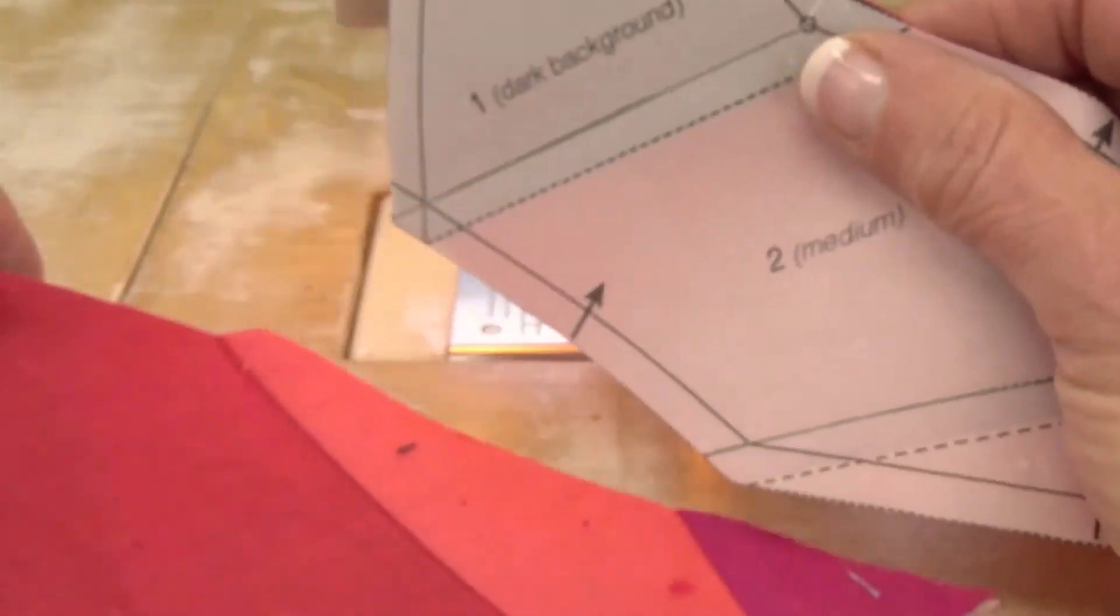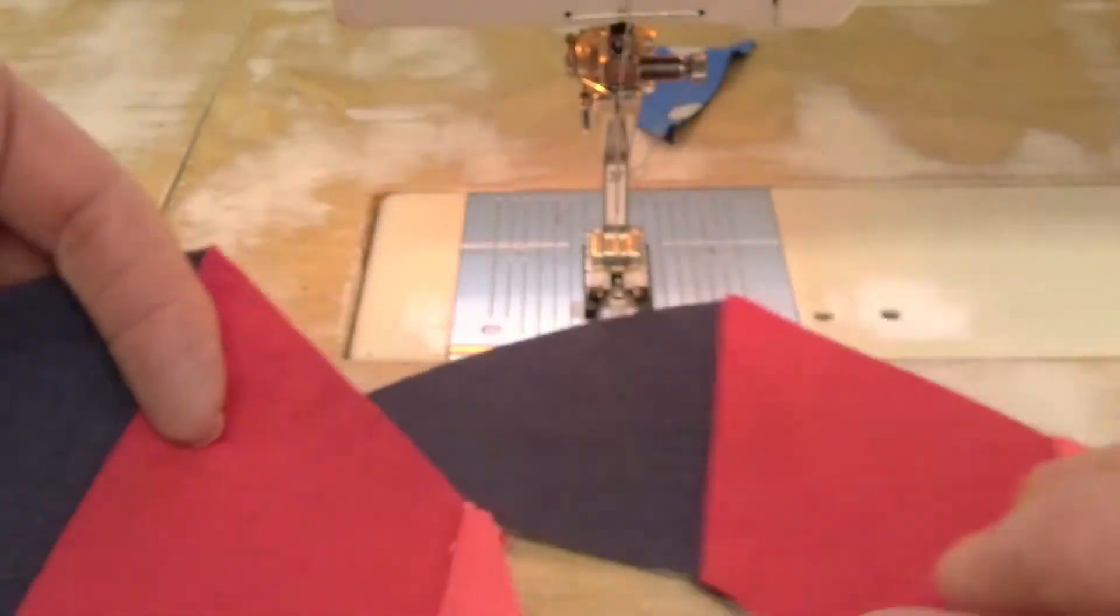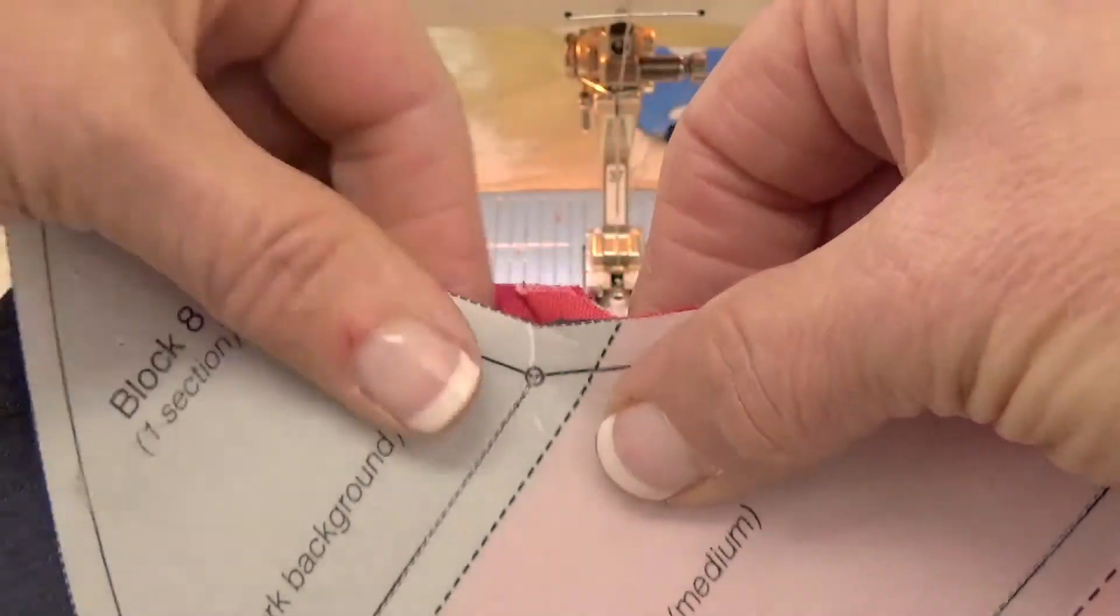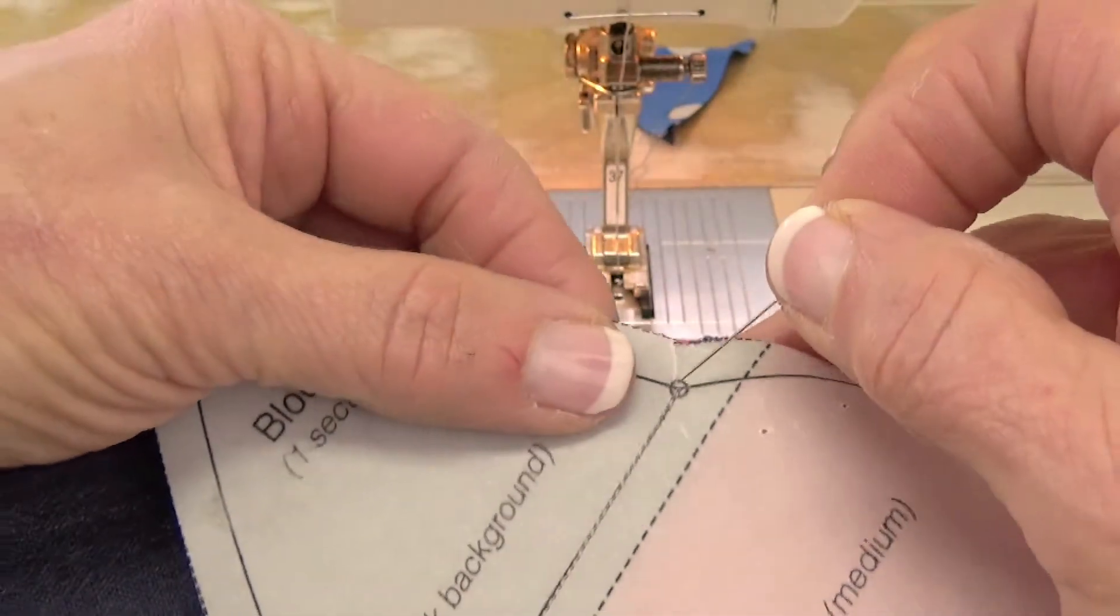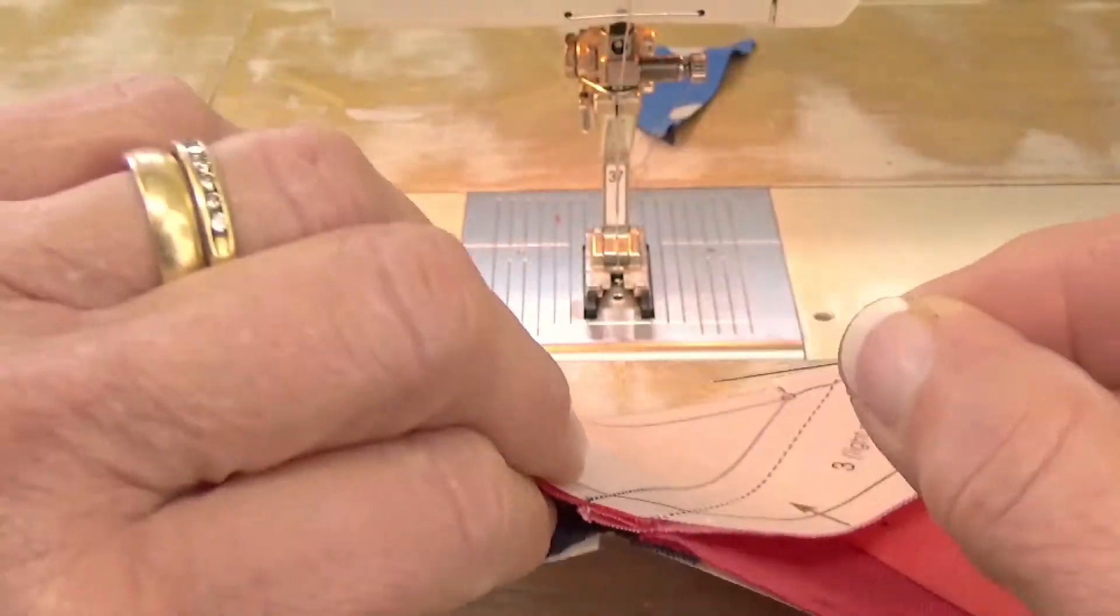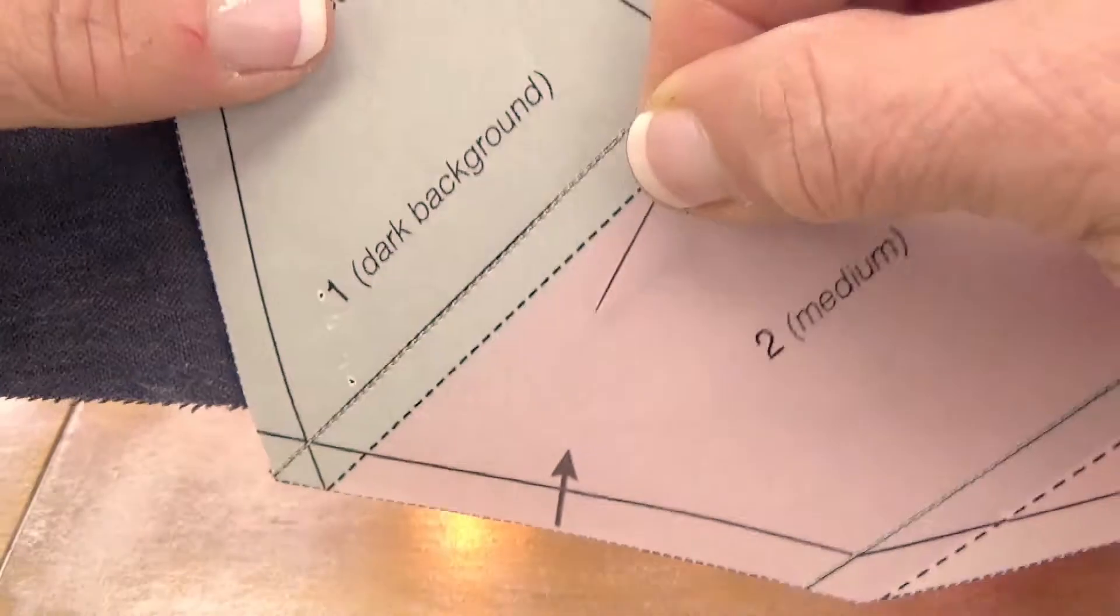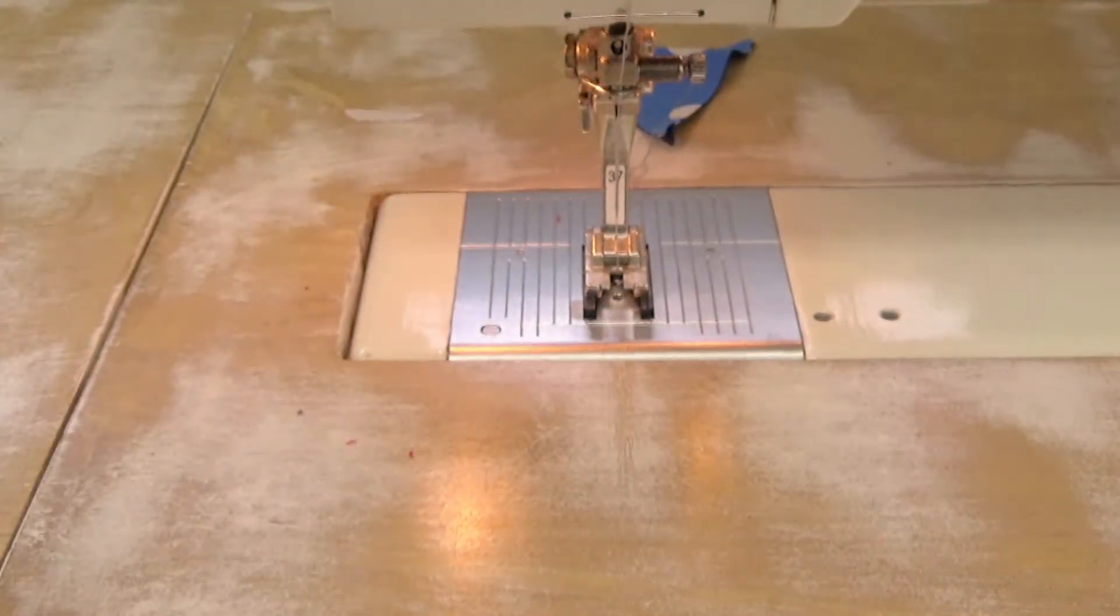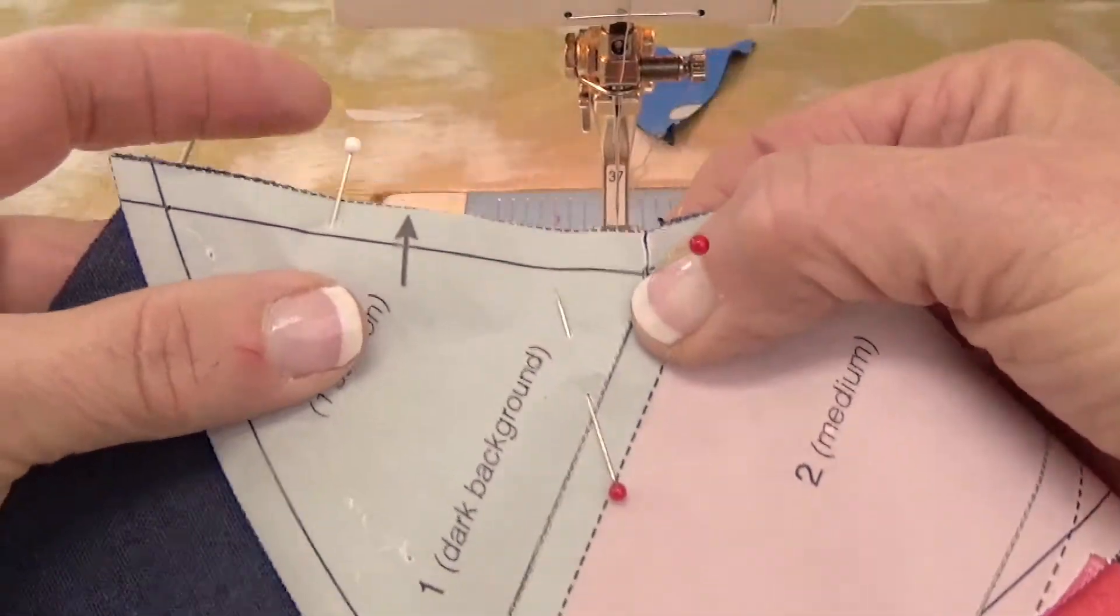Then you're going to take a matching section, turn these right sides together, and you'll use a positioning pin here through to the opposite side, and then you'll use a positioning pin at the far point. Now I've already got that done right here.